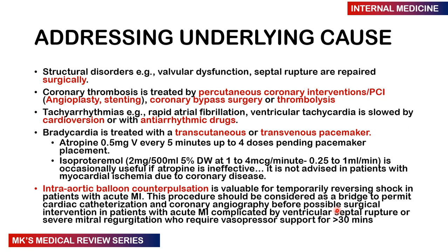For structural disorders such as valvular dysfunction or septal rupture, surgical repair is required. Coronary thrombosis is treated by percutaneous coronary interventions such as angioplasty and stenting, coronary bypass surgery, or thrombolysis. Tachyarrhythmias such as rapid atrial fibrillation and ventricular tachycardia are slowed by cardioversion or antiarrhythmic drugs. Bradycardia is treated by transcutaneous or transvenous pacemaker. In the interim, atropine 0.5 mg IV can be given every 5 minutes for up to 4 doses. If ineffective, isoproterenol — about 2 mg in 500 mL of 5% dextrose in water at 1–4 mcg/min — may be used, though this is contraindicated in patients with myocardial infarction or coronary disease.